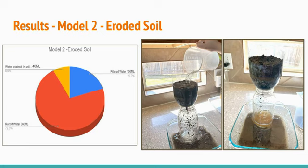You can see the filtering process in the pictures. The chart shows that the amount of filtered water was 20%, the runoff water was 72%, and the water retained in soil was 8% of the rainwater used.